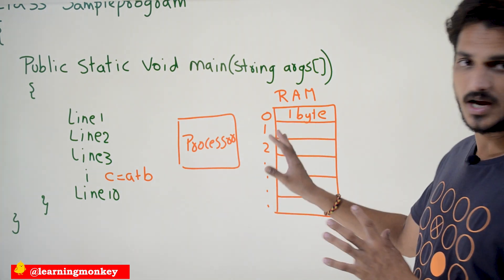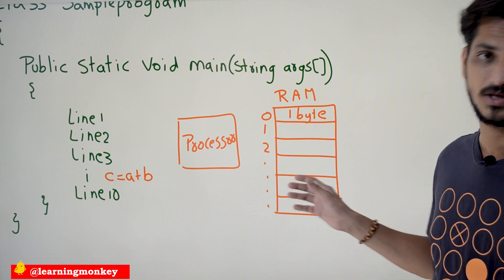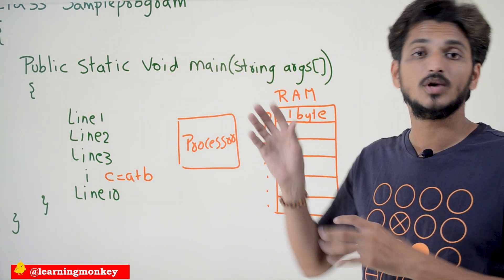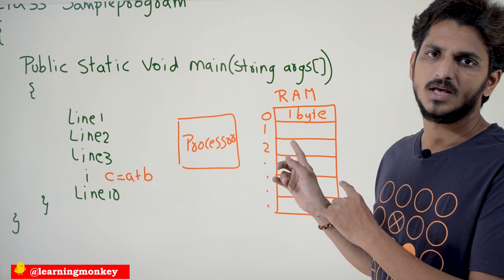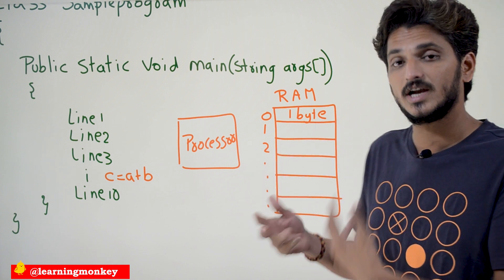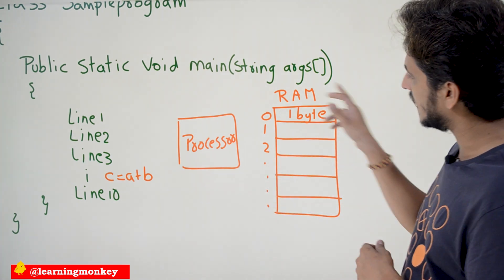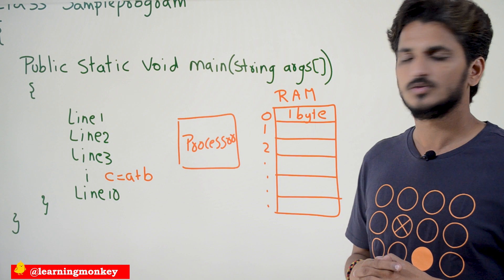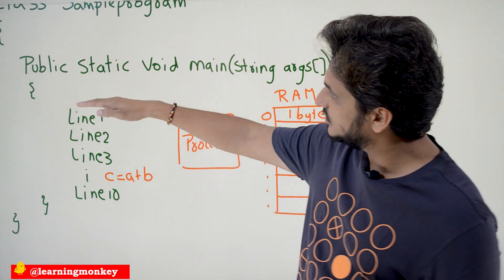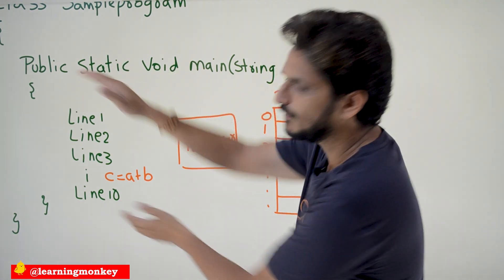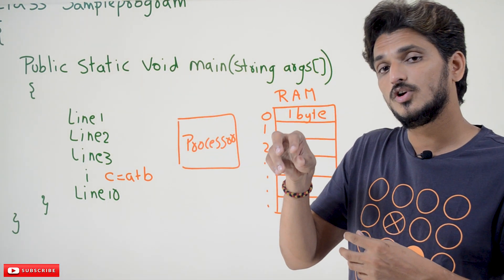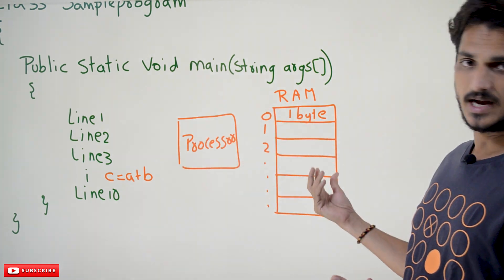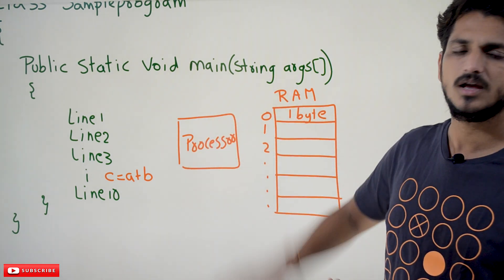If you have this random access memory understanding, we are going to use this memory understanding in our coming classes when we discuss about objects and all those things — using the same random access memory architecture. This is a simple random access memory architecture for understanding programming languages. There are multiple architectures for random access memory, but this is enough to understand programming. The points you have to remember: program execution starts from main, the body of the main is going to be executed line by line. Whenever it needs data in a line, it will contact the random access memory, get the data, and start executing.